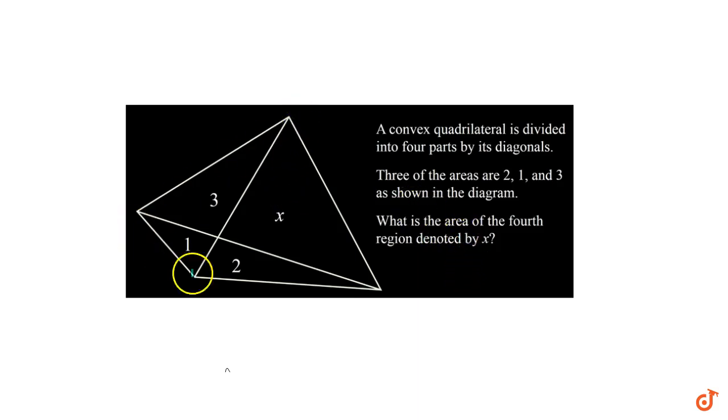We have a convex quadrilateral with diagonals dividing the total area into four parts. Three parts' areas are given, we need to calculate the fourth part. First, please try to solve this question and then watch the solution.